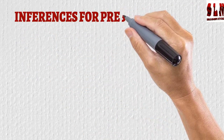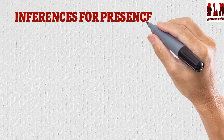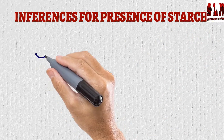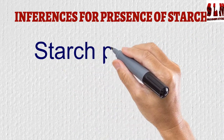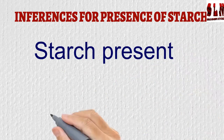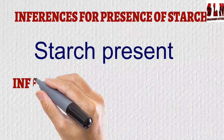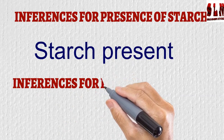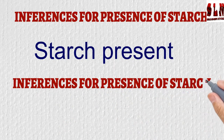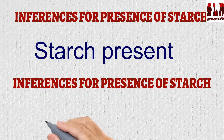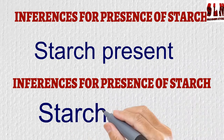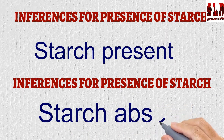The inference for the presence of starch: starch is present. The inference for the absence of starch: you are supposed to record that starch is absent.